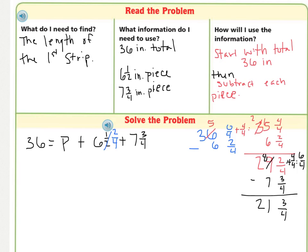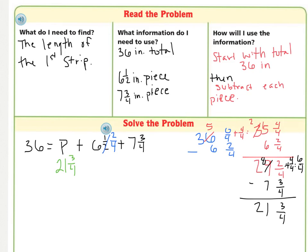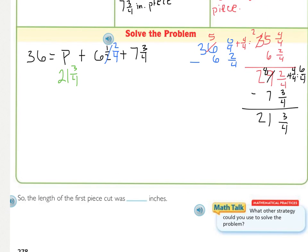After all your work and regrouping, you should have ended up with 21 and 3/4. You can check your answer by plugging in 21 and 3/4 to your equation. 21 plus 6 is 27, and 27 plus 7 is 34, which is close to 36 — so with those fractions, that checks out. That means the first piece was 21 and 3/4 inches long.